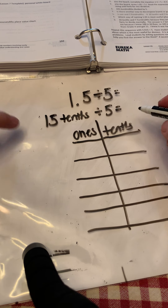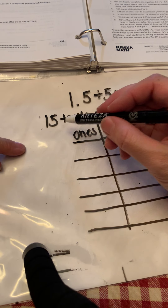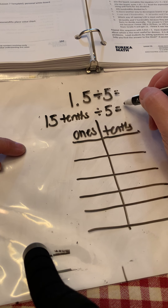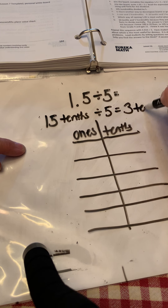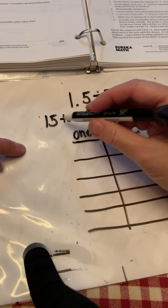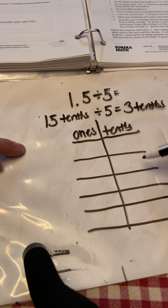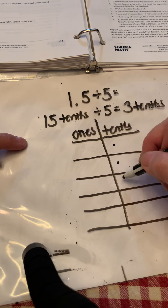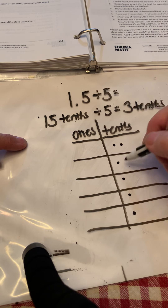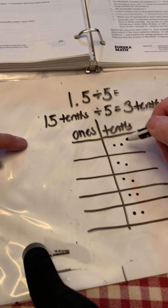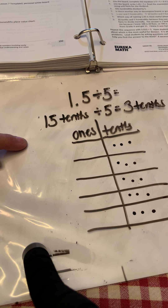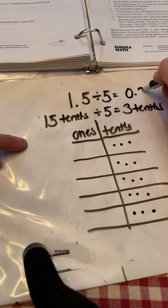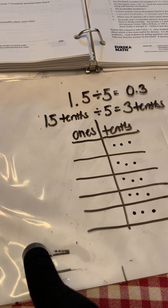Okay, you should have solved this now. I know my facts, so I know 15 tenths divided into 5 groups means there are 3 tenths in each group. 15 divided by 5 equals 3. If I didn't know that, I could take my 15 tenths and divide them one at a time across 5 groups. How many tenths are in each group? 3 tenths. And that's how you solve that problem.